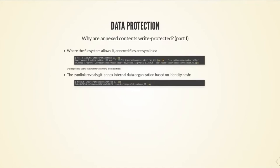The annex objects directory is the internal space where Git Annex manages your version-controlled files. This has advantages: if you have a repository where several copies of the same file exist, you only have to store it once. So if you have 100 files of one gigabyte each but they're all identical, the total storage space your dataset would need to take up is just one gigabyte instead of 100.